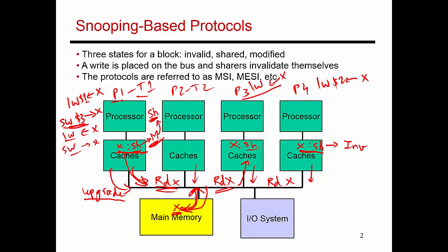Let's continue with this example. Let's say P2 makes a request for X — this is a read request. P2 has a cache miss and places a read X request on the bus. All of the other caches snoop, but because the block is in shared state in P3 and P1, they don't bother responding. Memory responds with the data, so X gets placed in P2's cache, also in shared state.